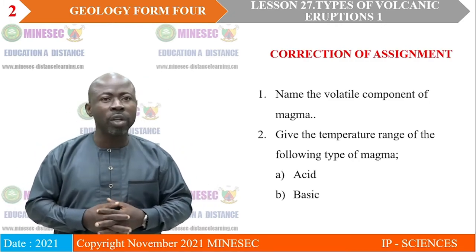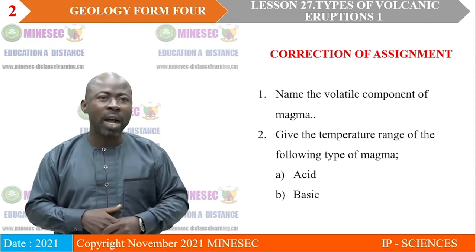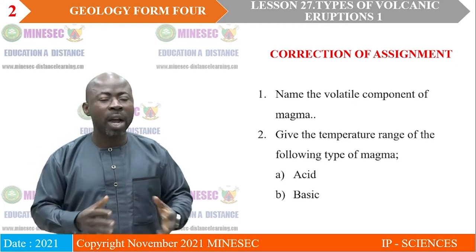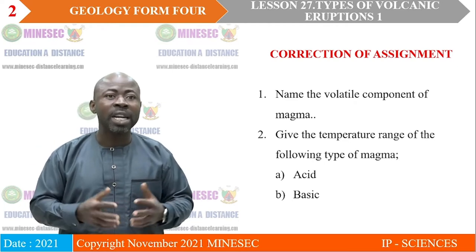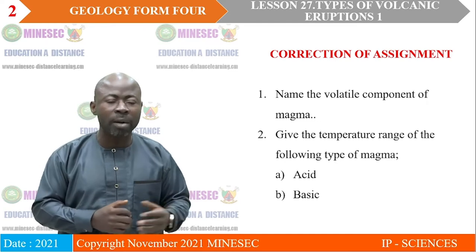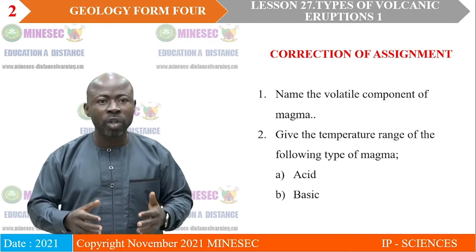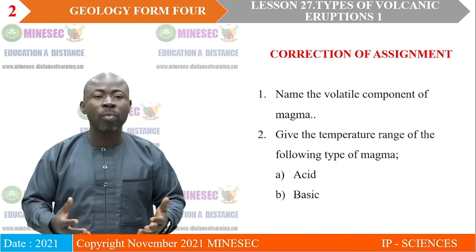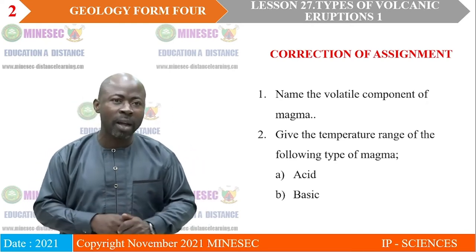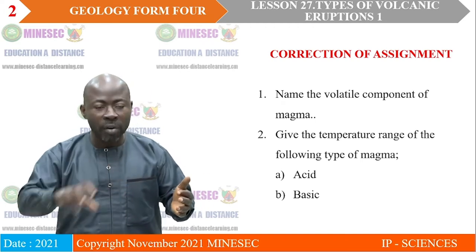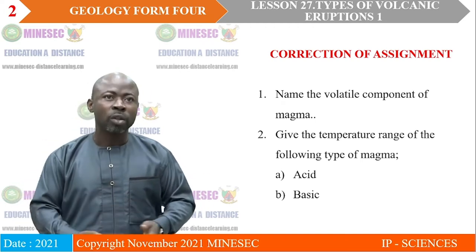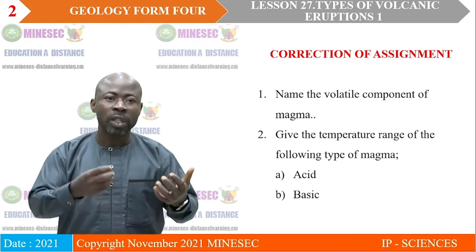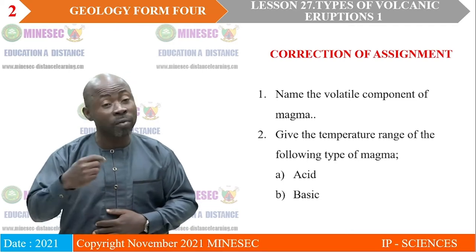Today, before we go into our Lesson 27, we'll look at the assignment that we had in Lesson 26. When we ended Lesson 26, we had two questions. The first question was: name the volatile components of magma. Two, give the temperature range of the following types of magma. Remember, we treated the volatile and gaseous components of magma, and also the temperature variation of the various types of magma. So to show your understanding of this lesson, we have to verify with these two questions.